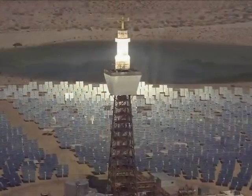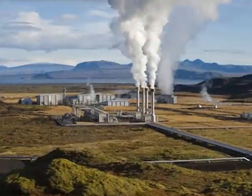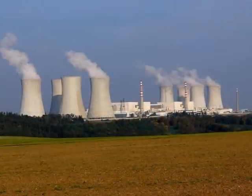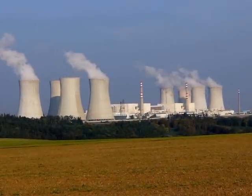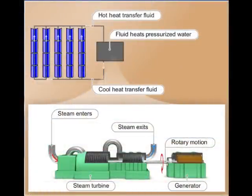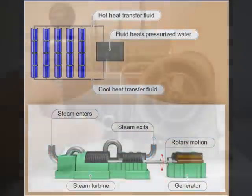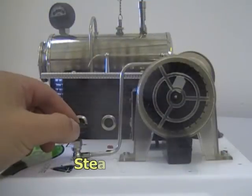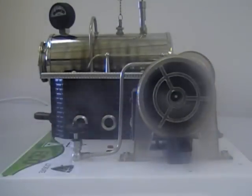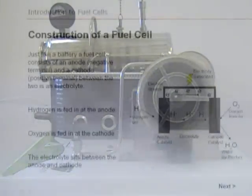Solar troughs, solar furnaces, biomass, nuclear and traditional coal, gas and oil power stations all use steam to drive a turbine and generate electricity. The steam turbine provided with the module enables the tutor to bring this technology to life.